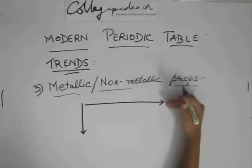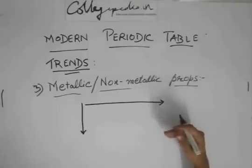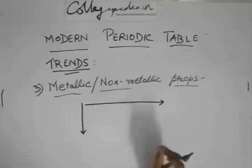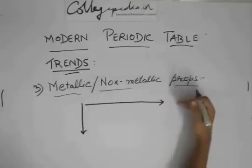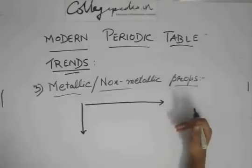But on the right side, if you go down, the non-metallic property decreases because the metallic property increases. So if you want the most non-metallic element, you should go to the extreme right but not go down, because going down decreases the non-metallic property.